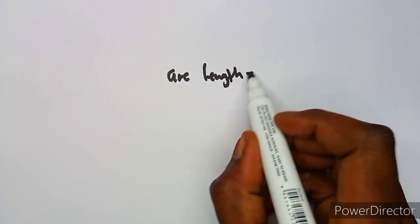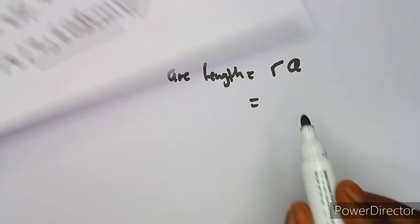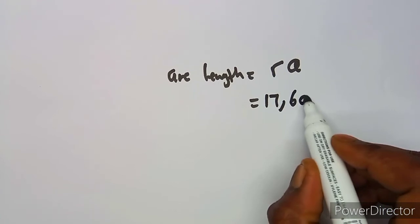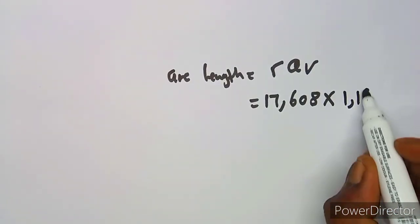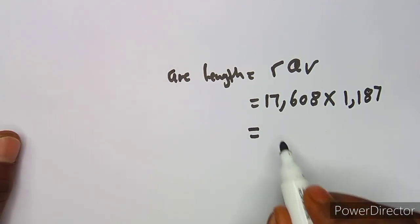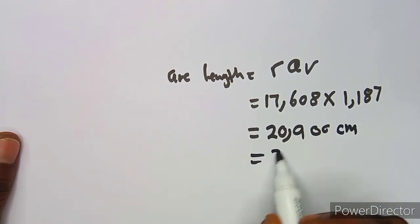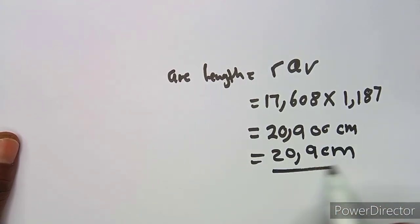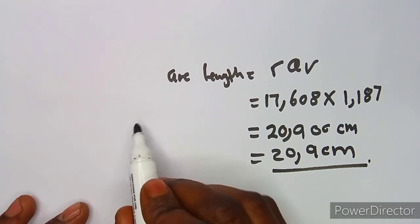Now calculate the arc length: s = r × θ = 17.608 × 1.187 = approximately 20.9 centimeters. That is the arc length of the sector.